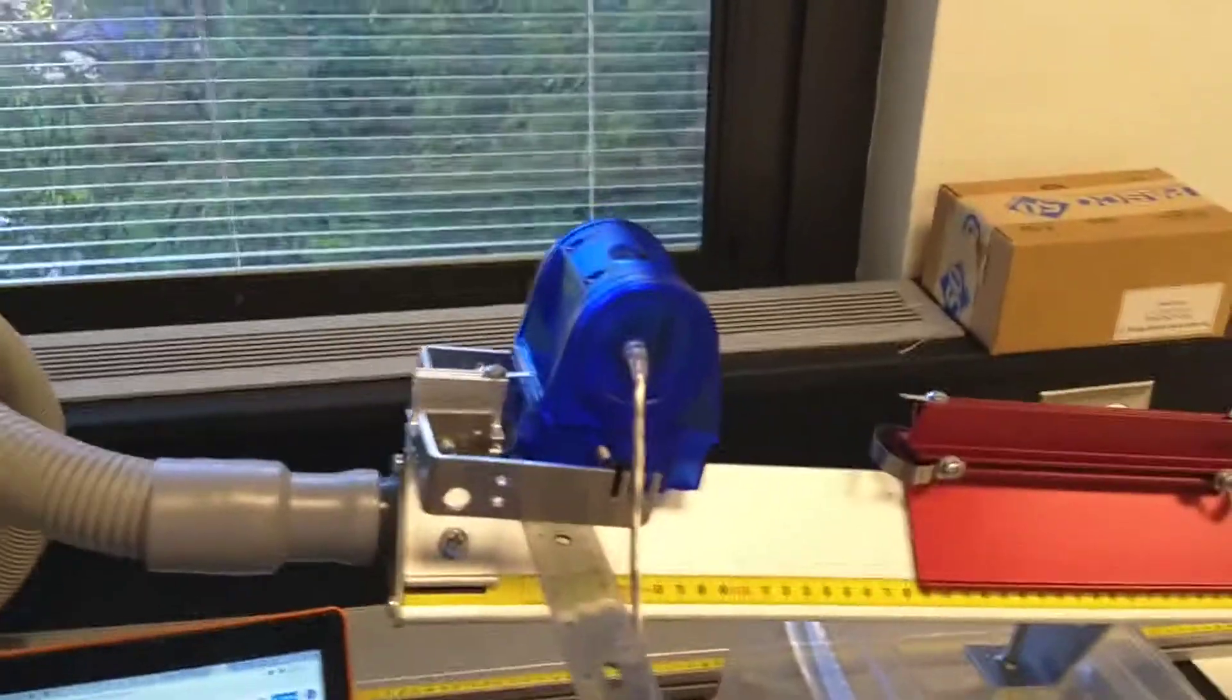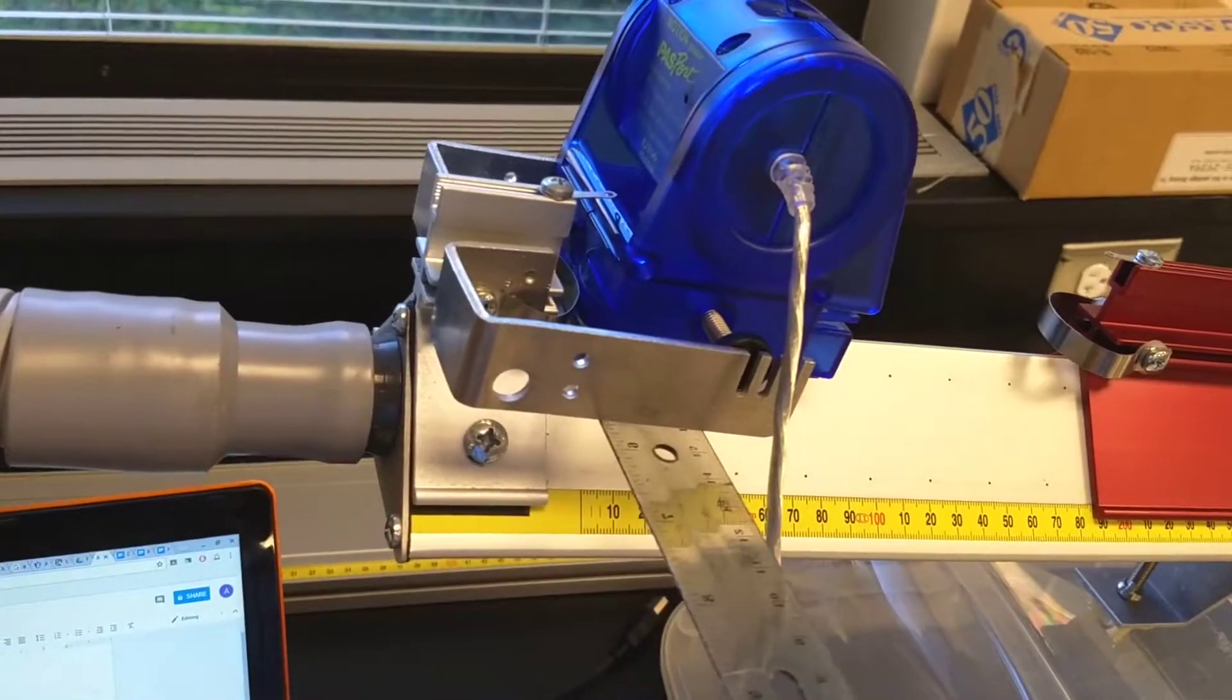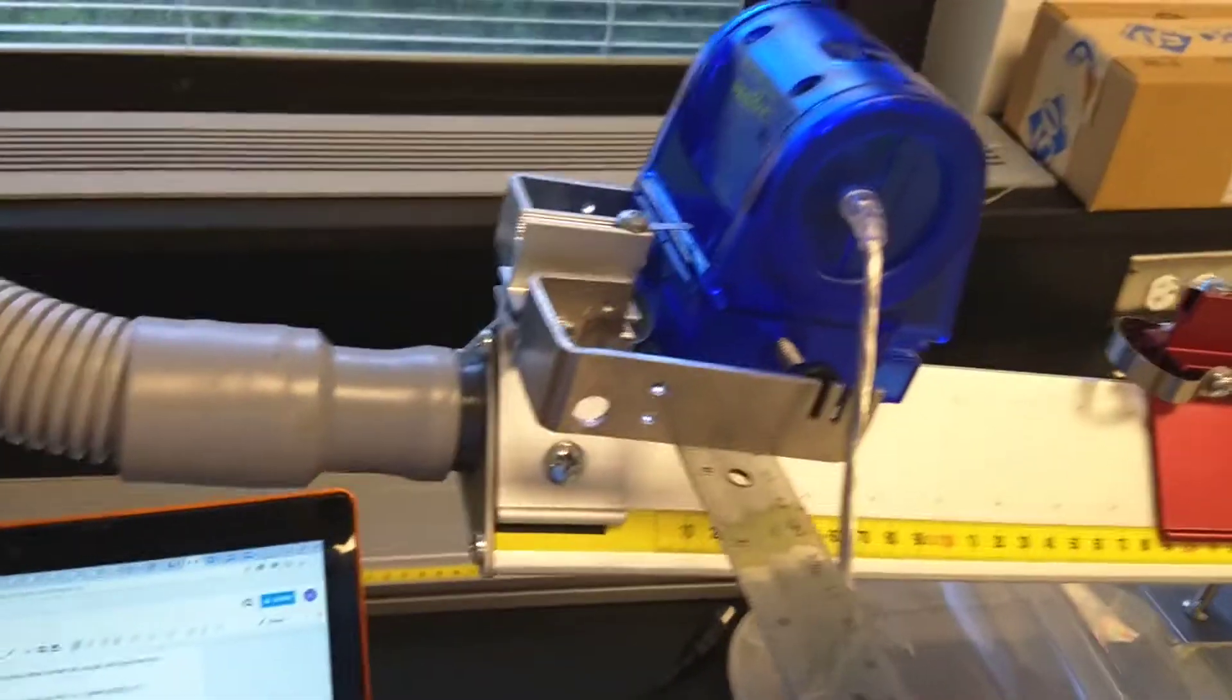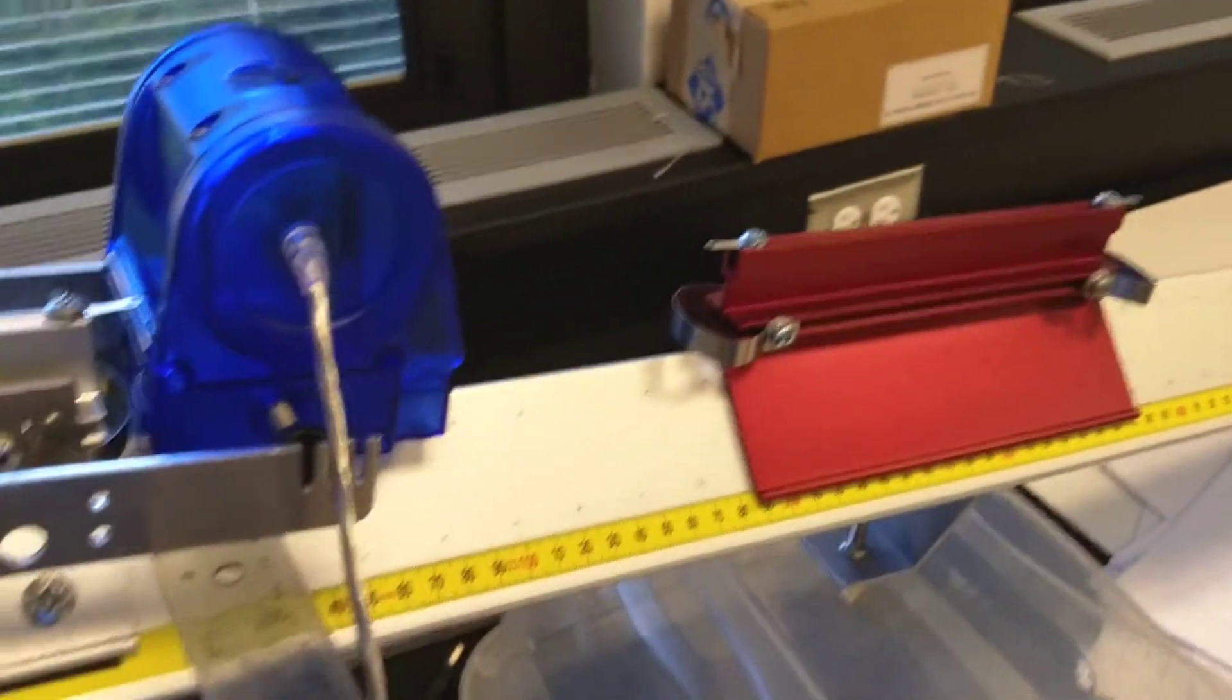This is the air track graph station. What you'll be doing in this one is making a velocity versus time graph for the motion of this little cart going down the track.